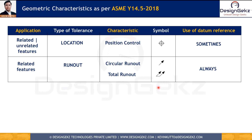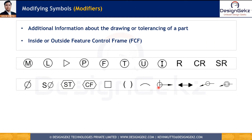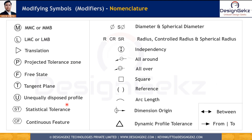Runout and total runout controls are applied for cylindrical features of size that rotate around another concentric or coaxial cylindrical feature of size. Apart from the 12 geometric characteristic symbols, ASME Y14.5 2018 also has 24 modifiers that provide additional information on the drawing and tolerancing of the part. These modifiers can be applied inside as well as outside the feature control frame.